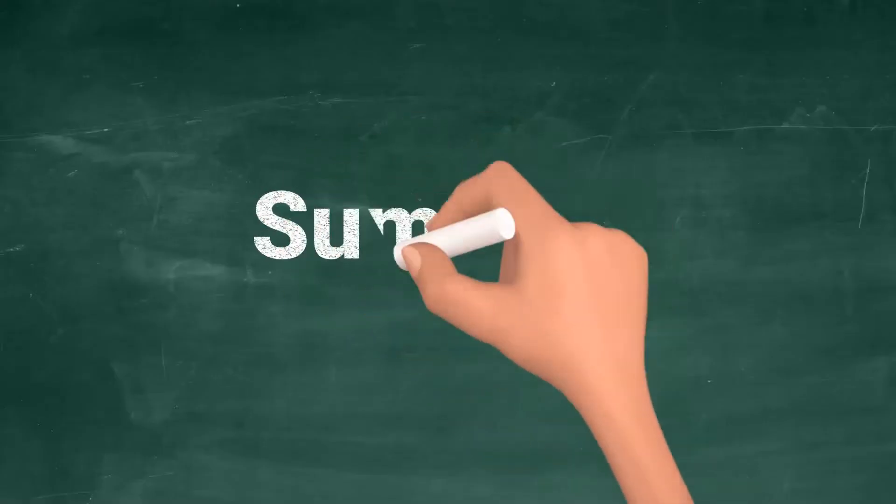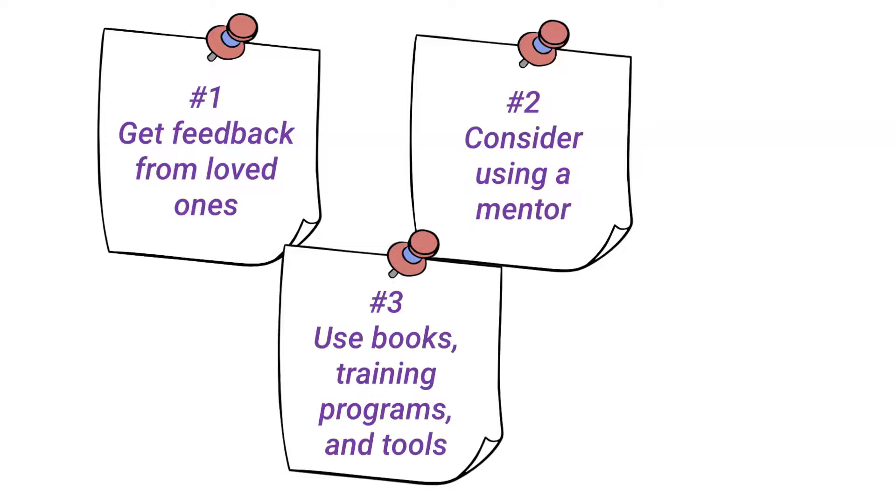Let's summarize the 7 tips to help you discover your life vision. 1. Get feedback from loved ones. They have your best interest at heart. 2. Consider using a mentor. You can leverage their experience and learn from their mistakes. 3. Use books, training programs, and tools. These can be powerful resources that provide guidance.